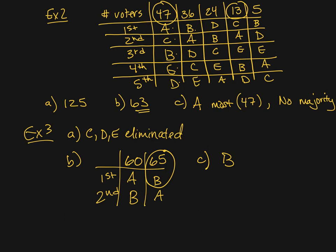In future sections, we're going to talk about different ways to calculate the vote. Right now we're just talking about how to set up a preference schedule, how to interpret elections, how to understand how many voters there are and how they're preferring things, and how to remove a candidate.